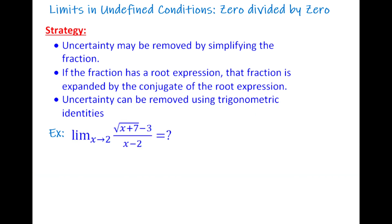Next example: find the limit of (√(x + 7) - 3) divided by (x - 2) as x goes to 2. Plugging in x = 2 gives √9 - 3 = 0 in the numerator and 0 in the denominator, so again 0 divided by 0. Since the fraction has a root expression, we'll apply the second strategy and multiply by the conjugate.